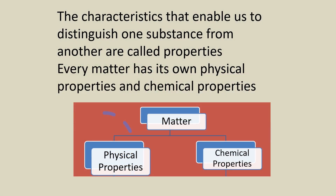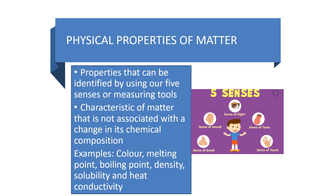The characteristics that enable us to distinguish one substance from another are called properties. Every matter has its own physical properties and chemical properties. Physical properties are the properties that can be identified by using our five senses or measuring tools — sight, smell, touch, hearing, and taste. Physical properties are the characteristics of matter that are not associated with a change in its chemical composition.